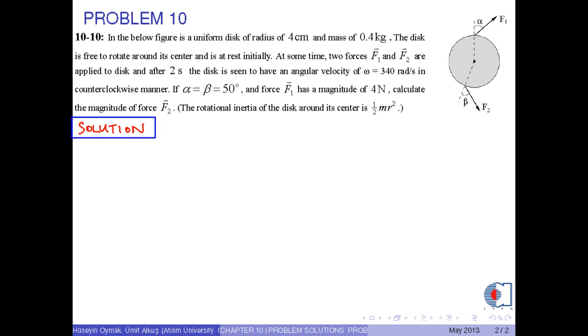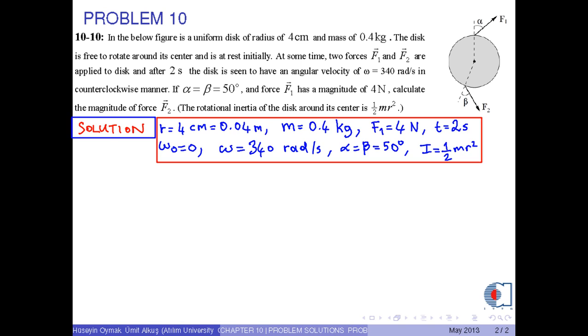At first, we write the given quantities in SI units. And we find angular acceleration alpha from this equation: omega equals omega_0 plus alpha times t. Because omega_0 is 0, then we obtain omega equals alpha times t.